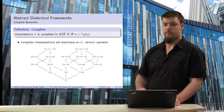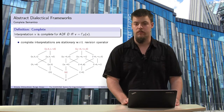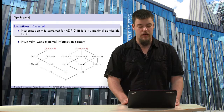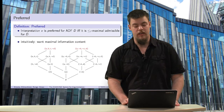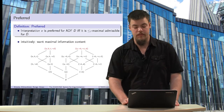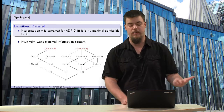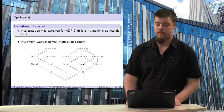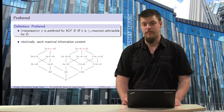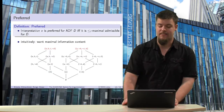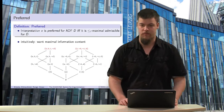The preferred interpretation is the information-maximal admissible interpretation. In this case, it is the same as the two-valued models from before.